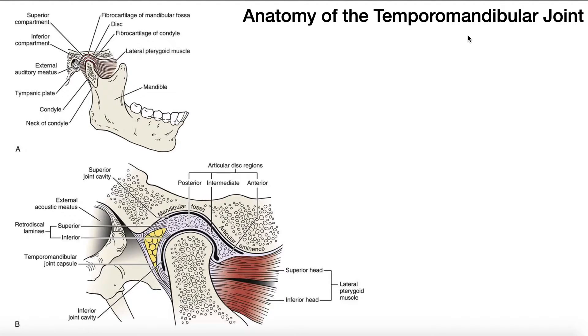The temporomandibular joint is the joint that allows movement of the mandible. When you chew, when you open your mouth, when you close your mouth, when you protrude your jaw, retract your jaw, move it laterally to either side, the only joint involved is the temporomandibular joint on either side.